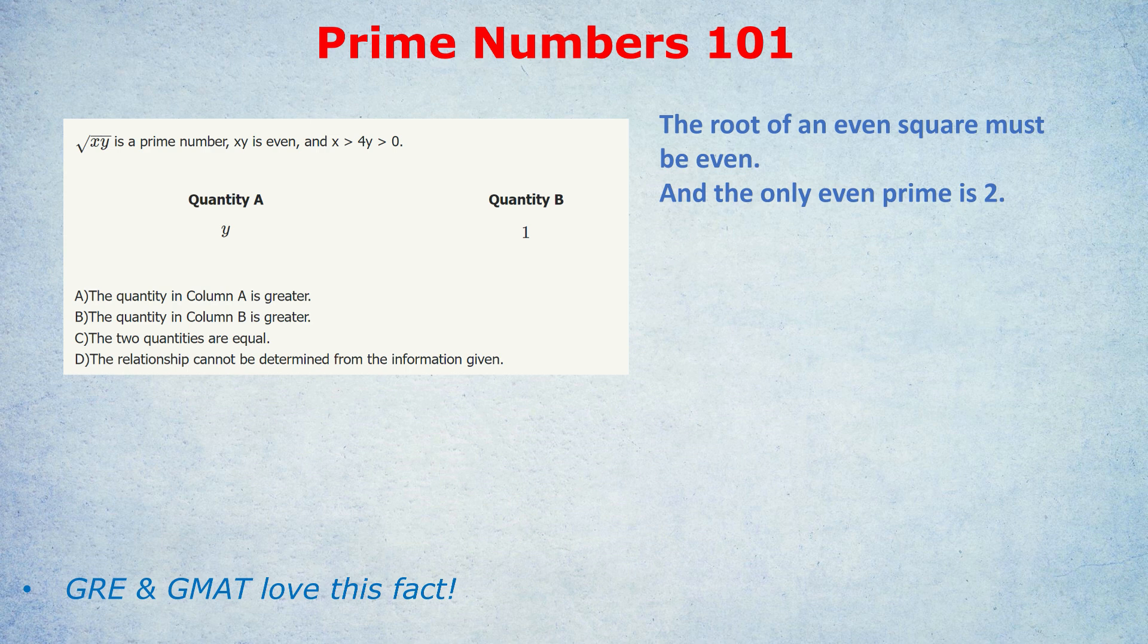The square root of xy is a prime number, and they said xy is even. The root of an even square must be even, and there's only one even prime number. So the square root of xy must be 2. It can't be a different prime number, like 3 or 5, because xy would not be even. The square root of xy must be 2 because 2 is the only even prime. Let's immediately square both sides - 2 squared is 4. So we know x times y is 4.